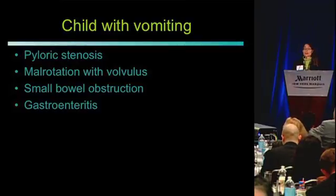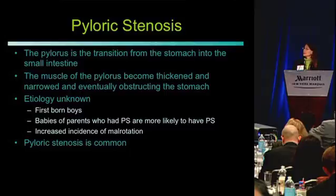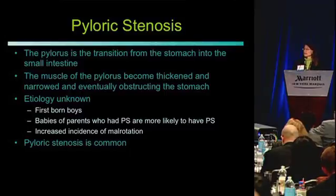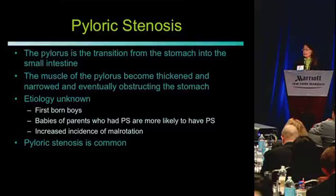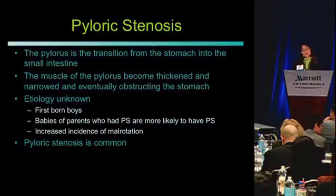Pyloric stenosis: the pylorus is at the end of the stomach, and the muscle of that part of the stomach — for reasons no one really knows — becomes thickened and can obstruct the stomach over time. It's seen in firstborn boys. Babies whose parents had pyloric stenosis are more likely to get it, and there is a slight increased incidence of malrotation in these kids. It's actually quite common, making it an important differential.